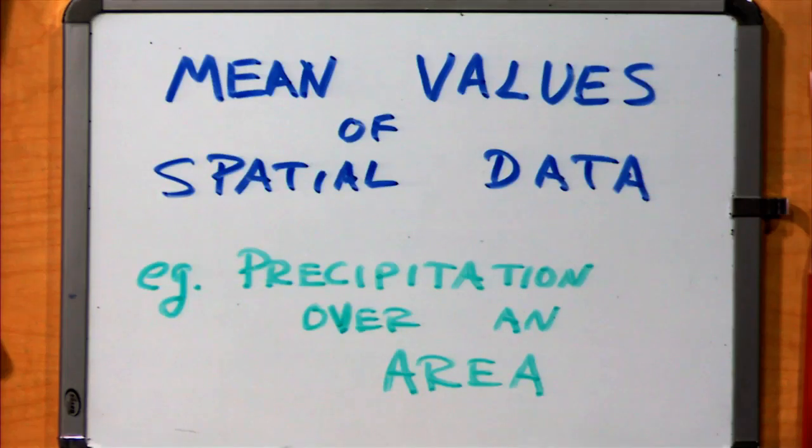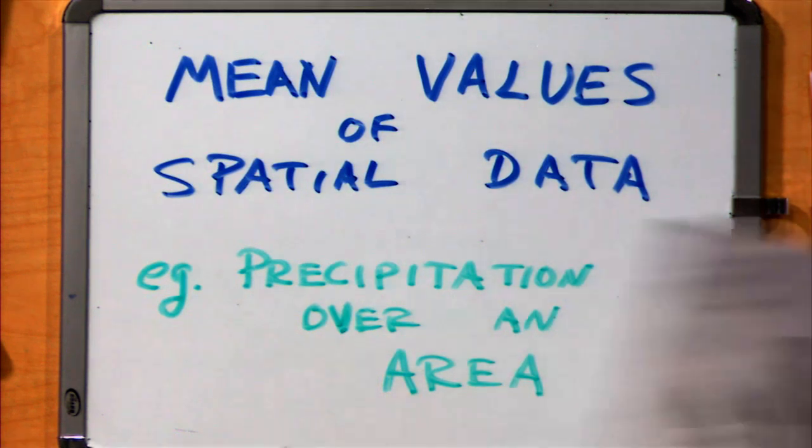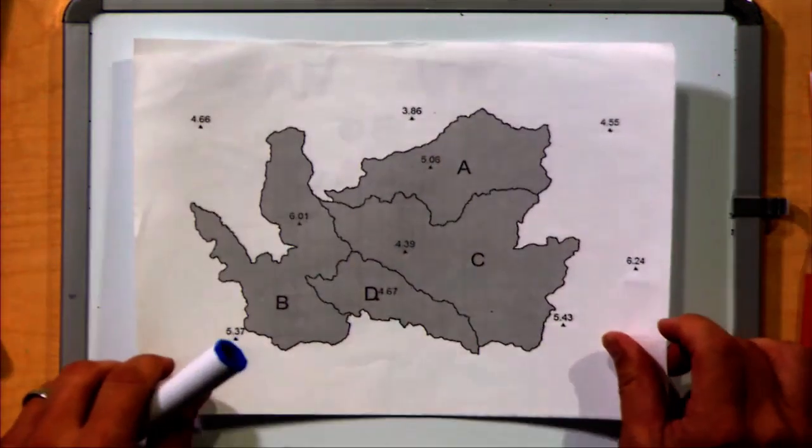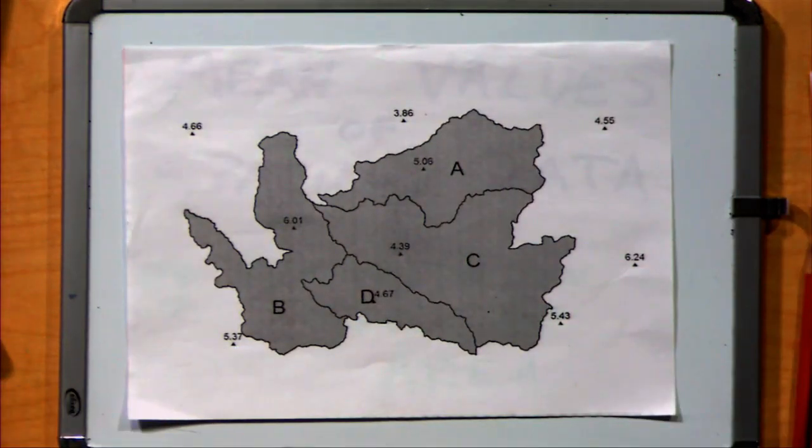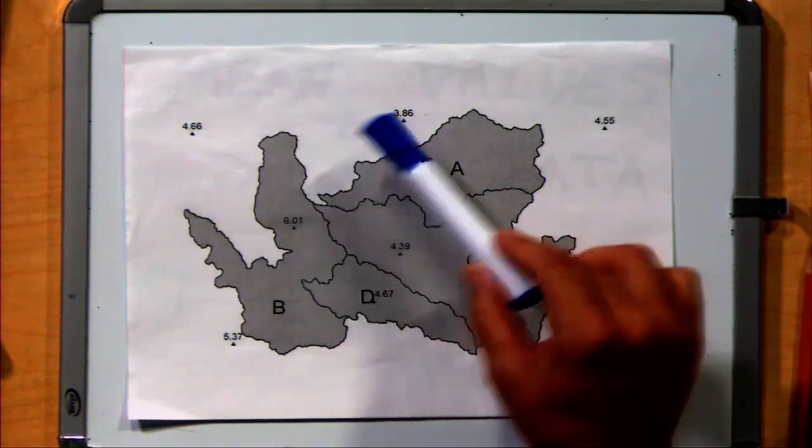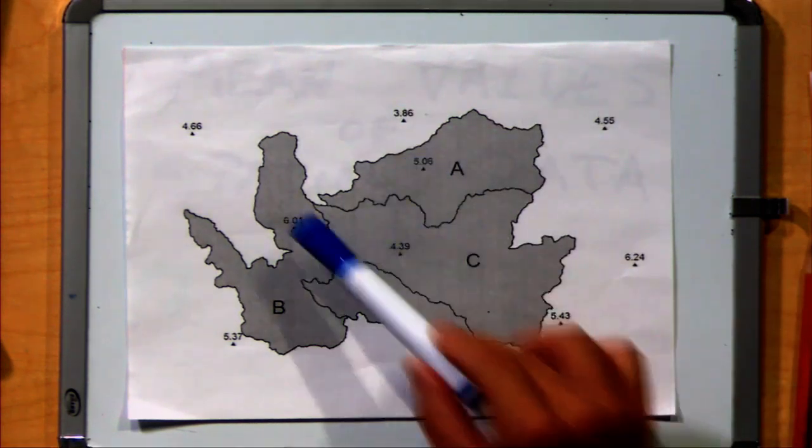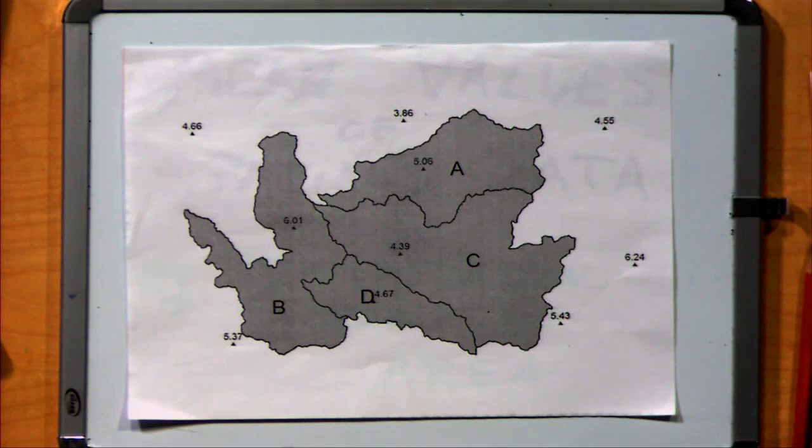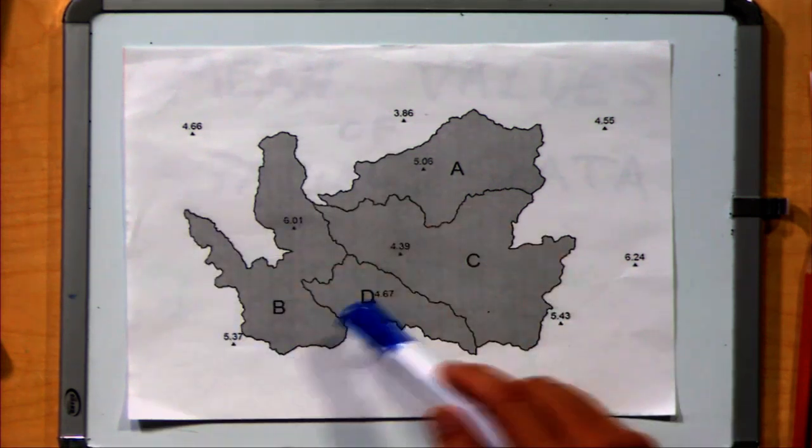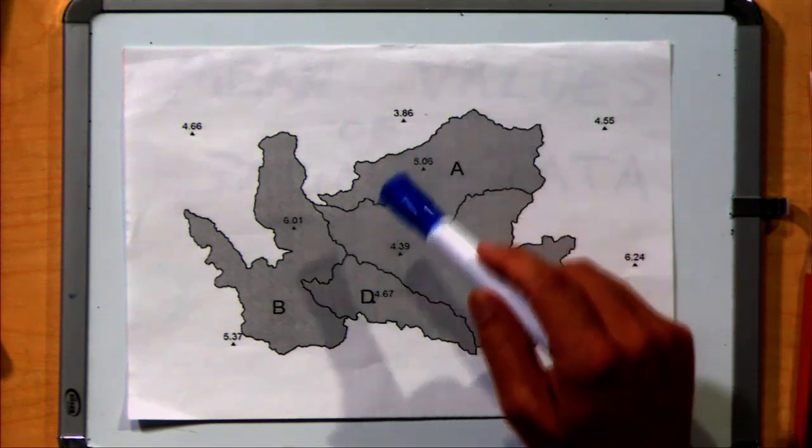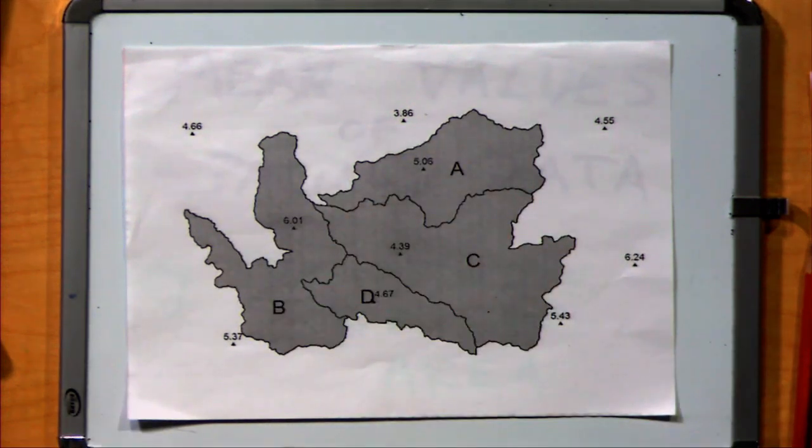Today we're going to talk about how to calculate mean values of spatial data. Our example will be precipitation over an area. We've already seen this example where we have rainfall data located at different rain gauges around a set of watersheds.